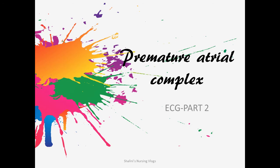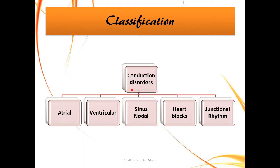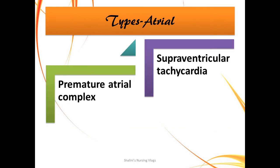Hi guys, this is Shalini and I'm back with another video. Today I am going to do a series on ECG — I have already done the basics of ECG, the link of which I'll leave in the description box. Today I am particularly going to discuss premature atrial complex: what it is, how easily you can identify an atrial complex or an ectopic beat, and what the classic features are. There are various conduction disorders — atrial disorders, ventricular arrhythmias, sinus nodal disorders, heart blocks, or junctional rhythms.